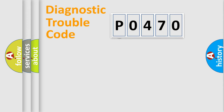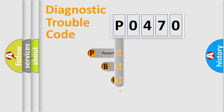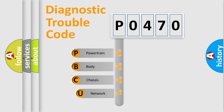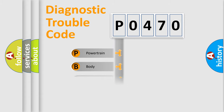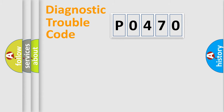First, let's look at the history of diagnostic fault code composition according to the OBD2 protocol, which is unified for all automakers since 2000. We divide the electrical system of the automobile into four basic units: Powertrain, Body, Chassis, and Network.